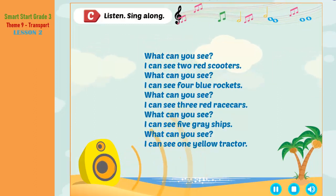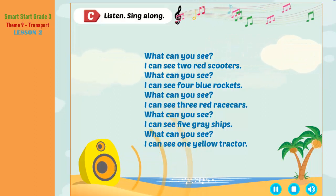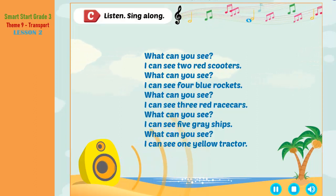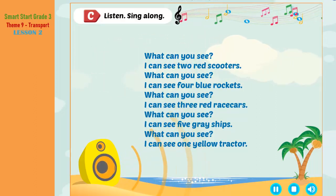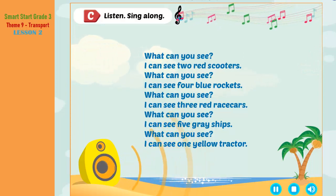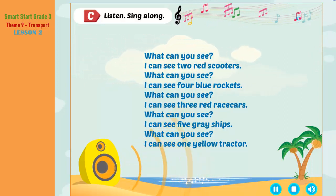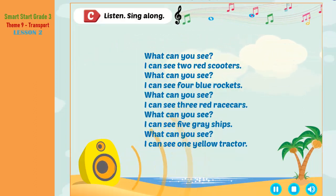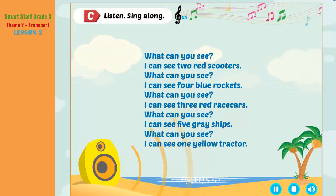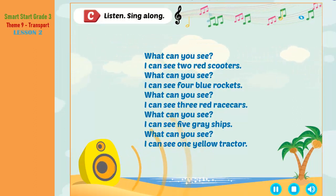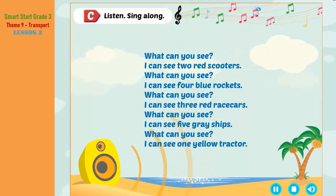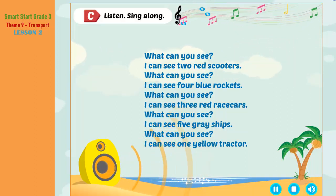What can you see? I can see two red scooters. What can you see? I can see four blue rockets. What can you see? I can see three red race cars. What can you see? I can see five grey ships. What can you see? I can see one yellow tractor.